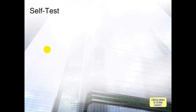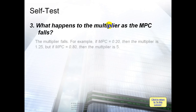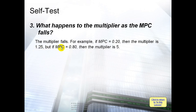What is the relationship between the multiplier and the MPC? The relationship is positive: when MPC increases, the multiplier increases; when MPC decreases, the multiplier decreases. For example, if MPC = 0.20 then the multiplier is 1.25, but if MPC = 0.80 then the multiplier is 5. So as MPC rises, the multiplier rises.